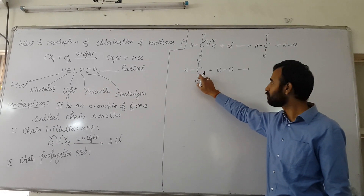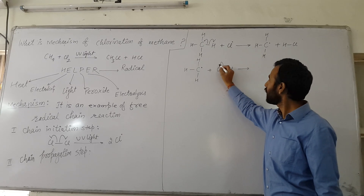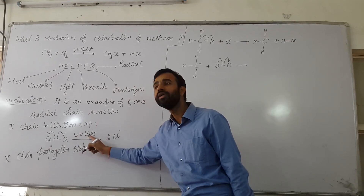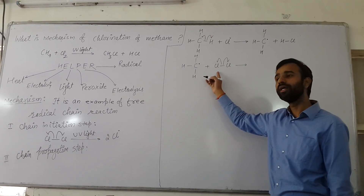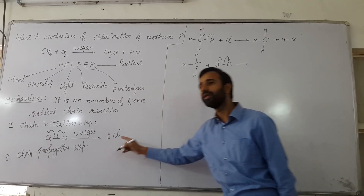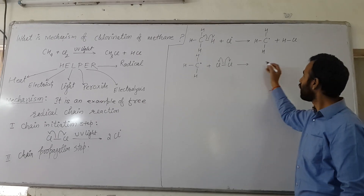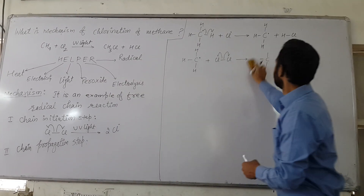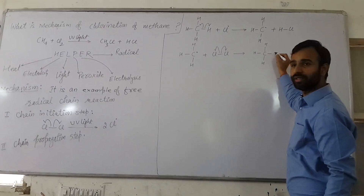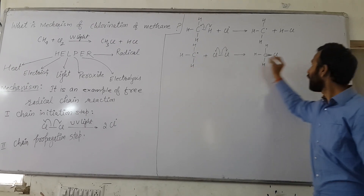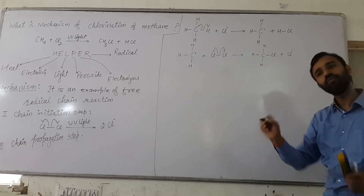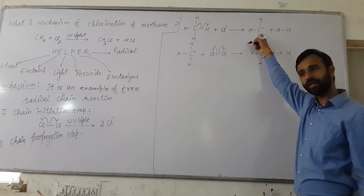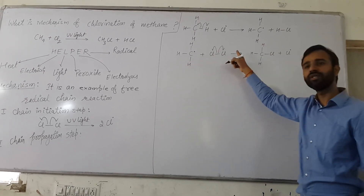Now the methyl free radical reacts with a chlorine molecule. The methyl free radical breaks the Cl–Cl bond homolytically — no UV light is needed at this stage. A C–Cl bond forms and we get CH₃Cl, and another chlorine free radical is generated. So chlorine free radical generates methyl free radical, and methyl free radical generates chlorine free radical — the chain continues.